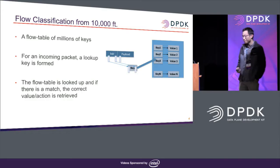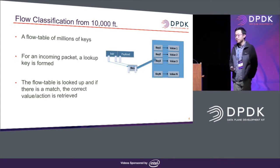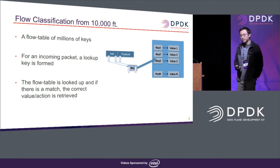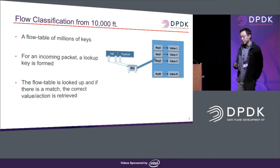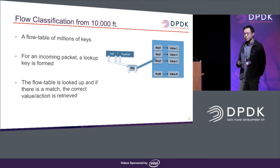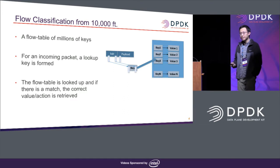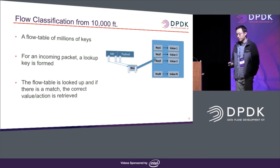I'll briefly describe flow classification in our context — it's a bit different than the flow classification of the NDPI presented this morning. In our context, flow classification is to classify each packet to its corresponding flow. Usually you have a data structure like a flow table or a trie or some other data structures. For each packet, you extract the header, get a key, and try to look up the data structure to find the associated data entry.